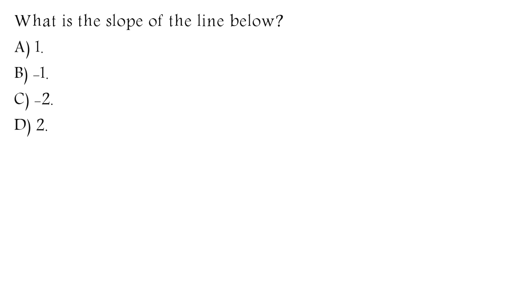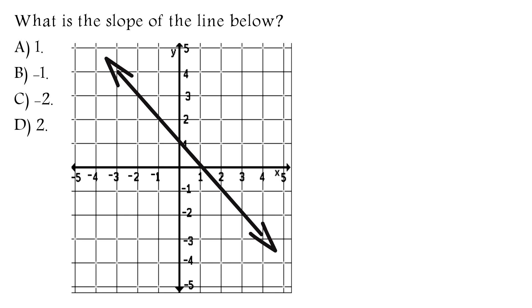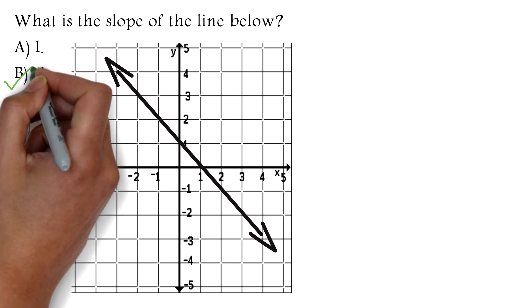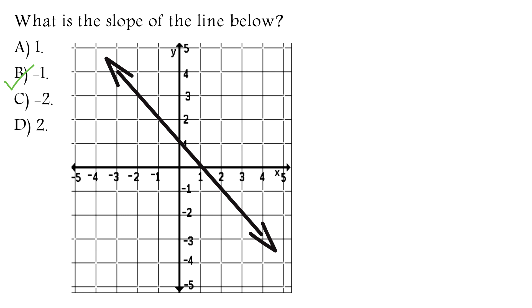What is the slope of the line below? A. 1, B. negative 1, C. negative 2, D. 2. The correct answer is B, negative 1. The slope of a line is the change in y over the change in x.